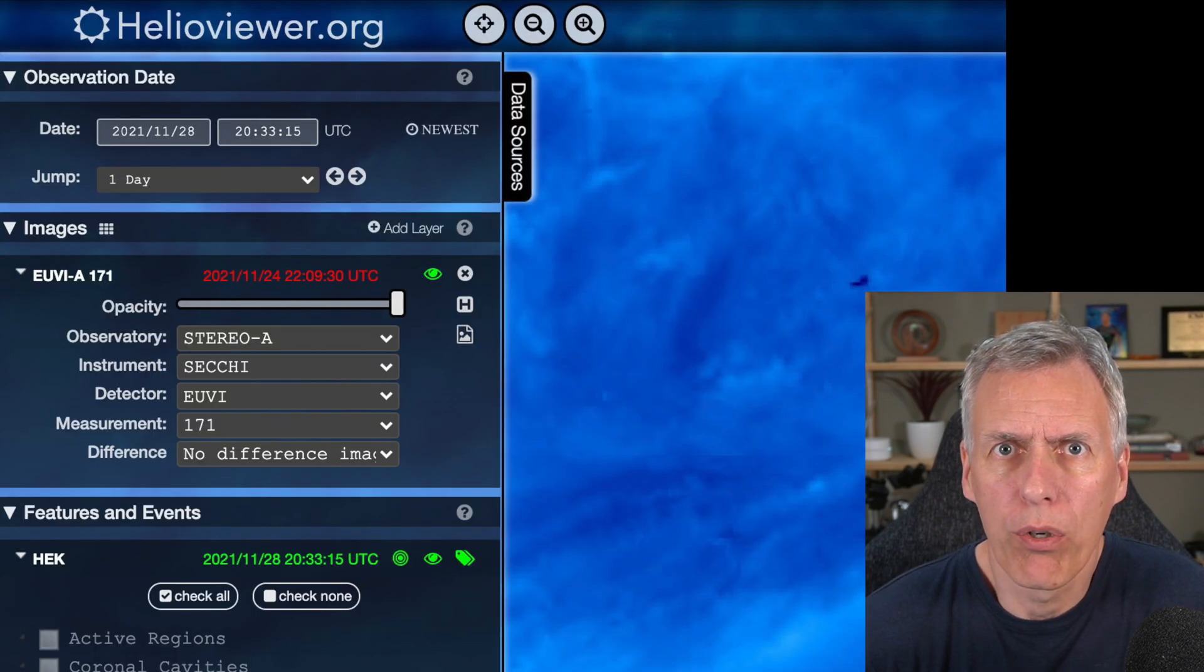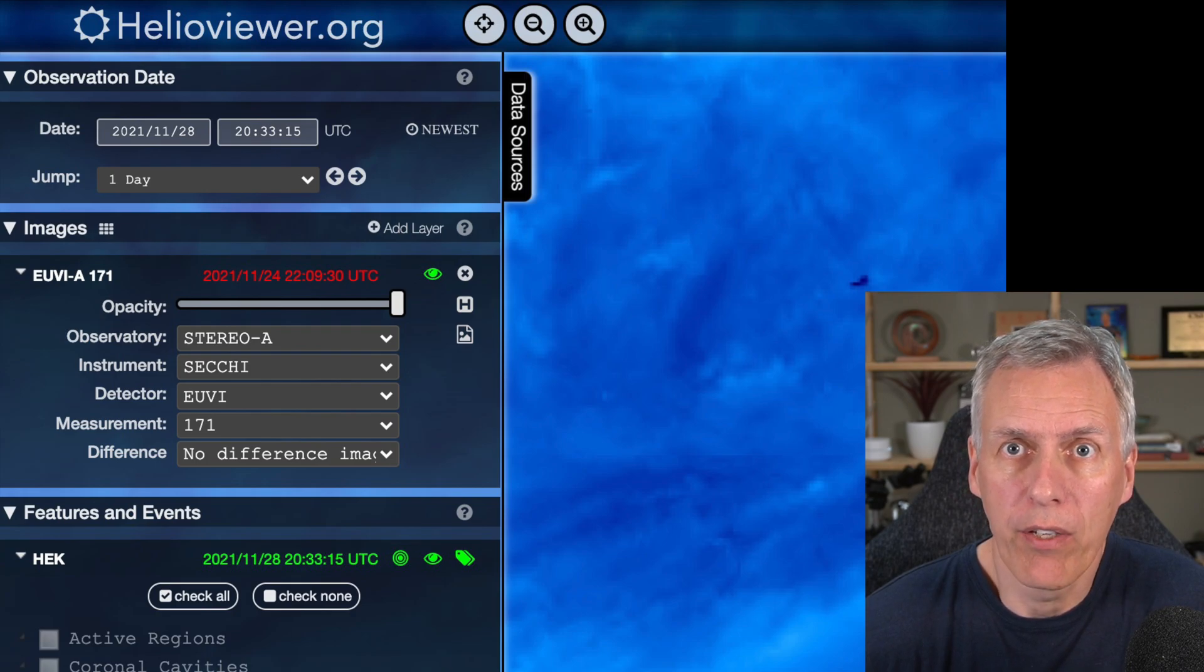You can go to helioviewer.org, select Stereo A and EUVI, and you can see this for yourself and make time-lapse videos of it moving.